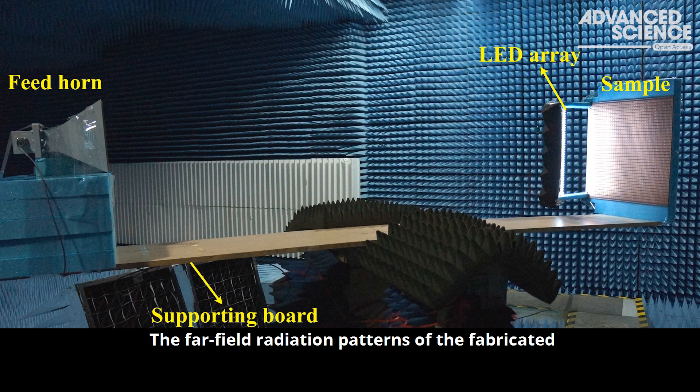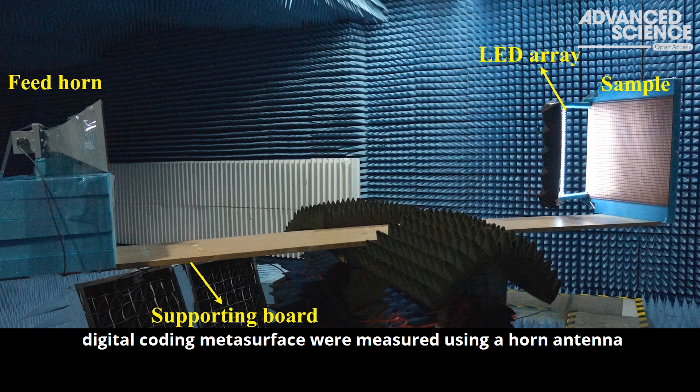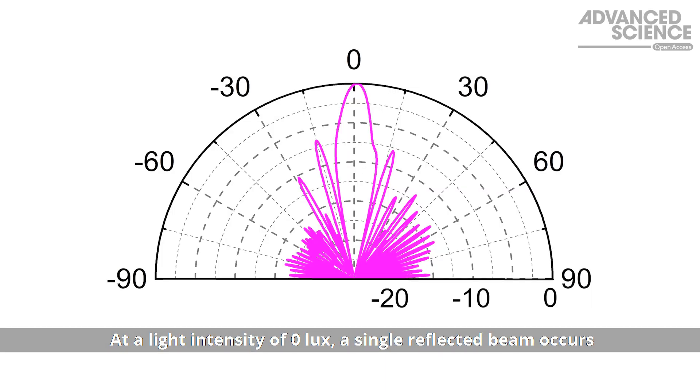The far-field radiation patterns of the fabricated digital coding metasurface were measured using a horn antenna as the excitation source. At a light intensity of 0 lux, a single reflected beam occurs, and the coding sequence consists entirely of 0s.